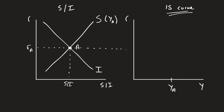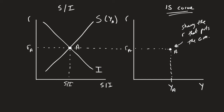What that tells us is we can now see a relationship between the real interest rate and output. This single point is showing the real interest rate — r_a — that puts the goods market in equilibrium at y_a. That's what that single point on the IS curve is showing.